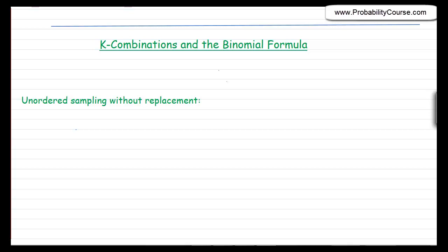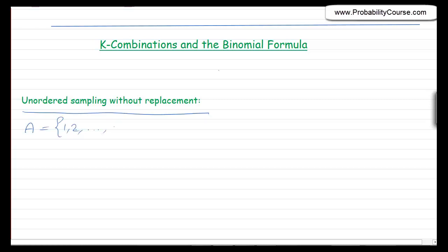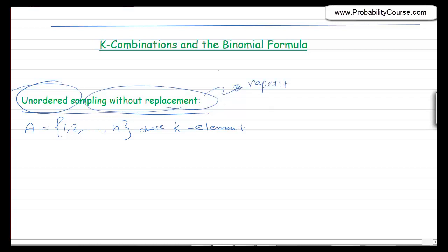We were talking about situations where we were sampling from a set of size n. Now we want to talk about unordered sampling without replacement. So we have a set of size n — let's say it's 1, 2, 3, up to n — and I want to choose k elements from that set. It is unordered, so I don't care in which order I choose them, and it's without replacement, which means repetition is not allowed. I cannot choose the same element twice. Another way of saying this is that I'm choosing a k-element subset of this set — a subset of size k.